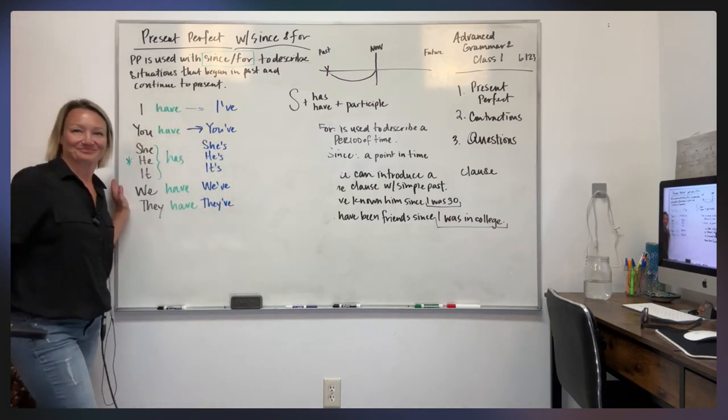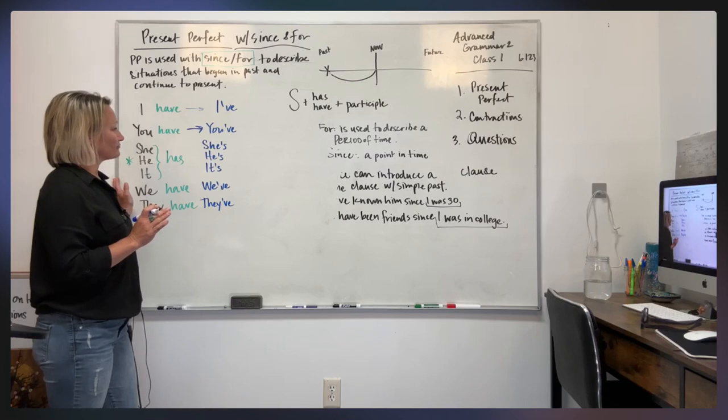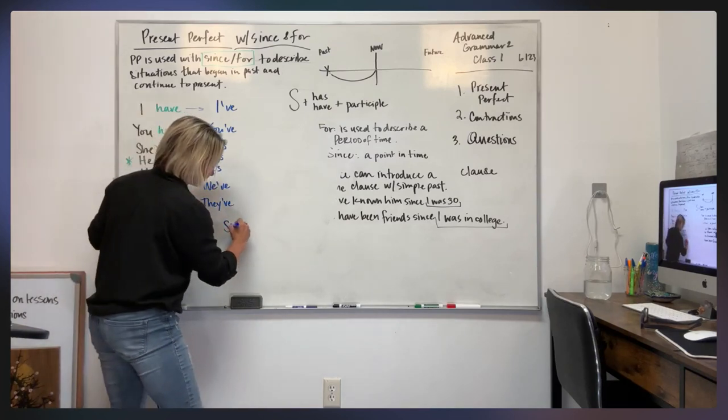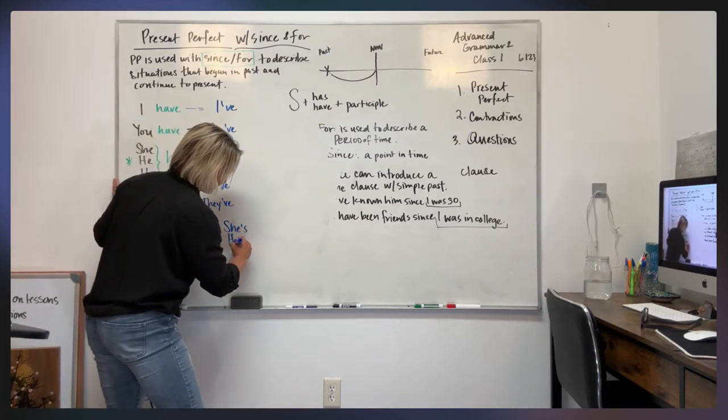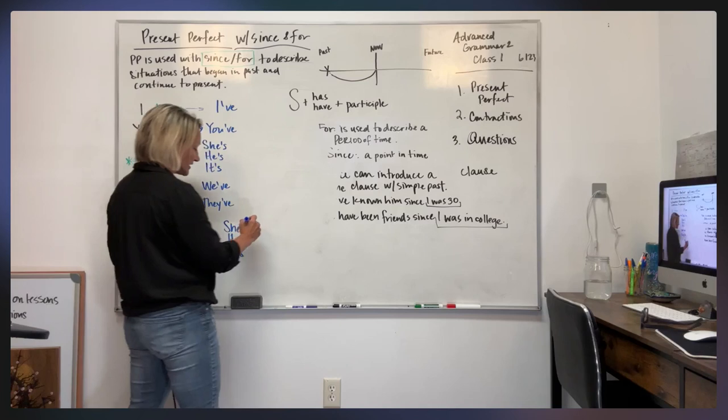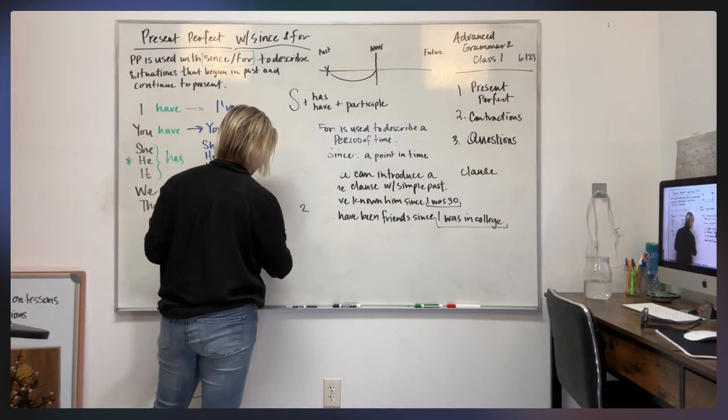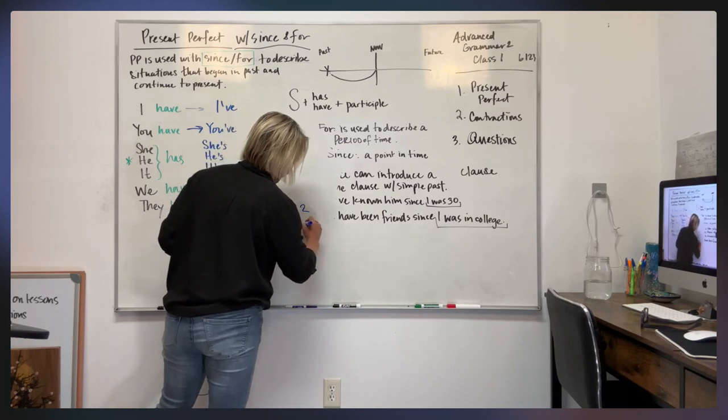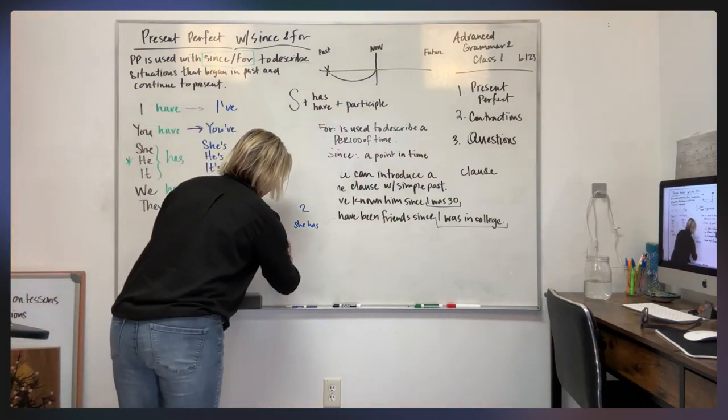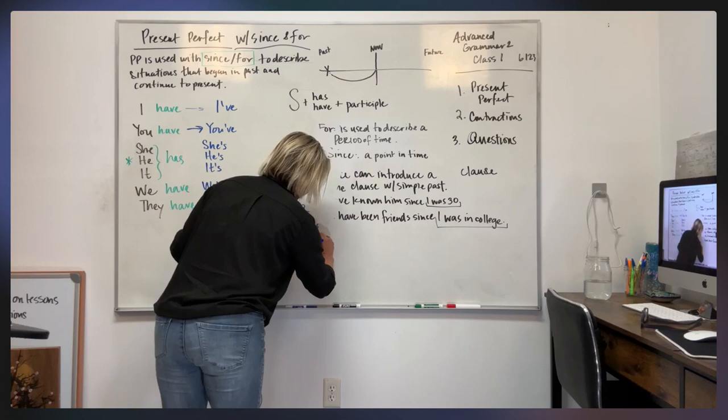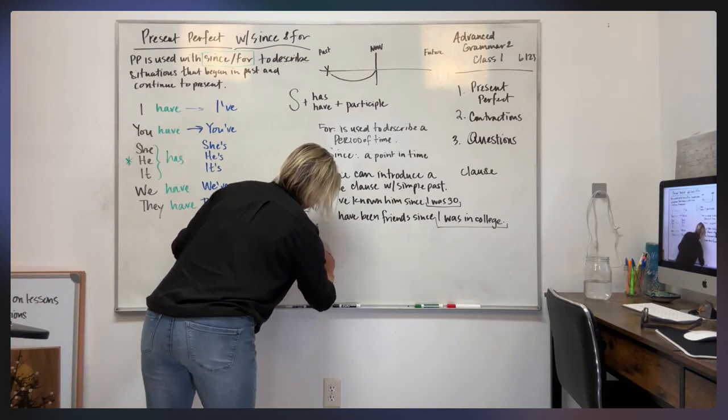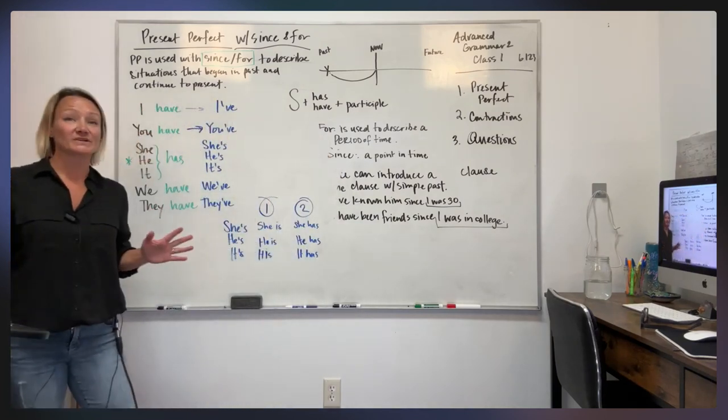Now we have, so what's tricky about she's and he's and it's, what's tricky about that, you guys. So these contractions can be two things, one or two. It can be she is or she has. Okay. Same here. He is or he has. It is or it has.